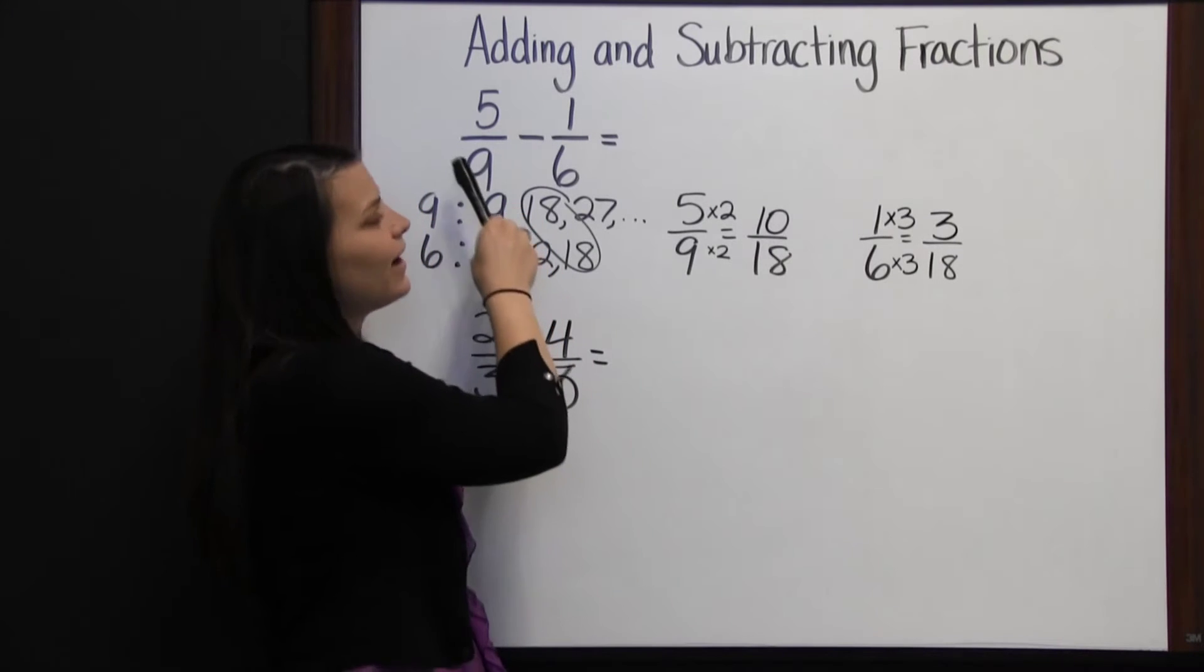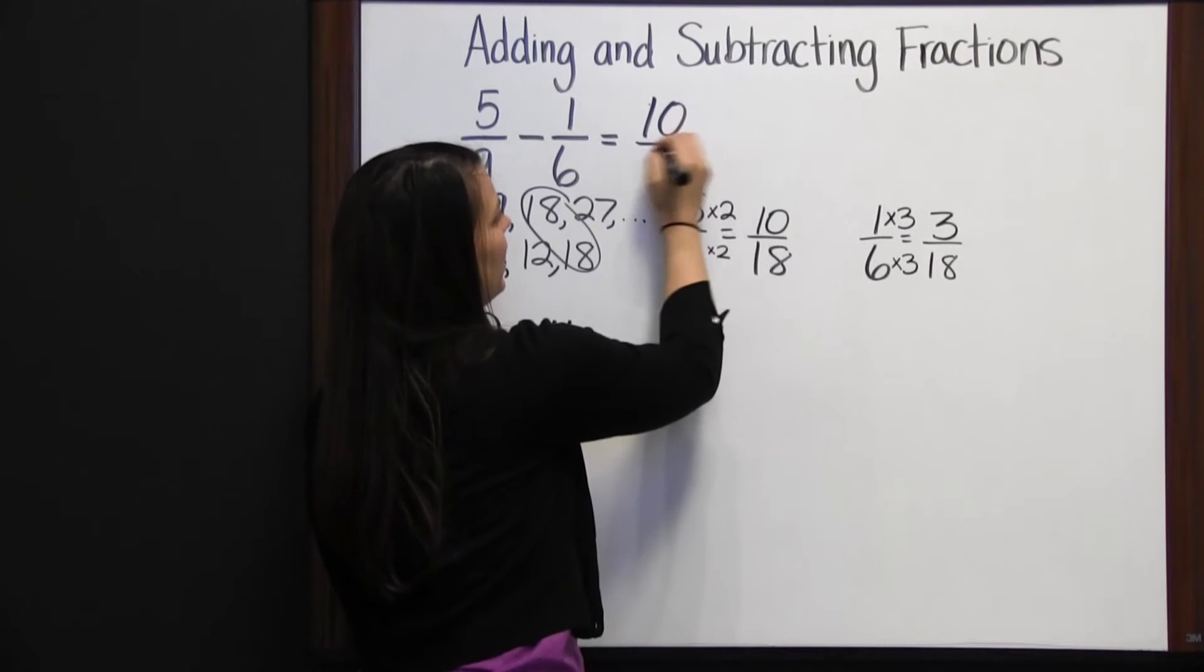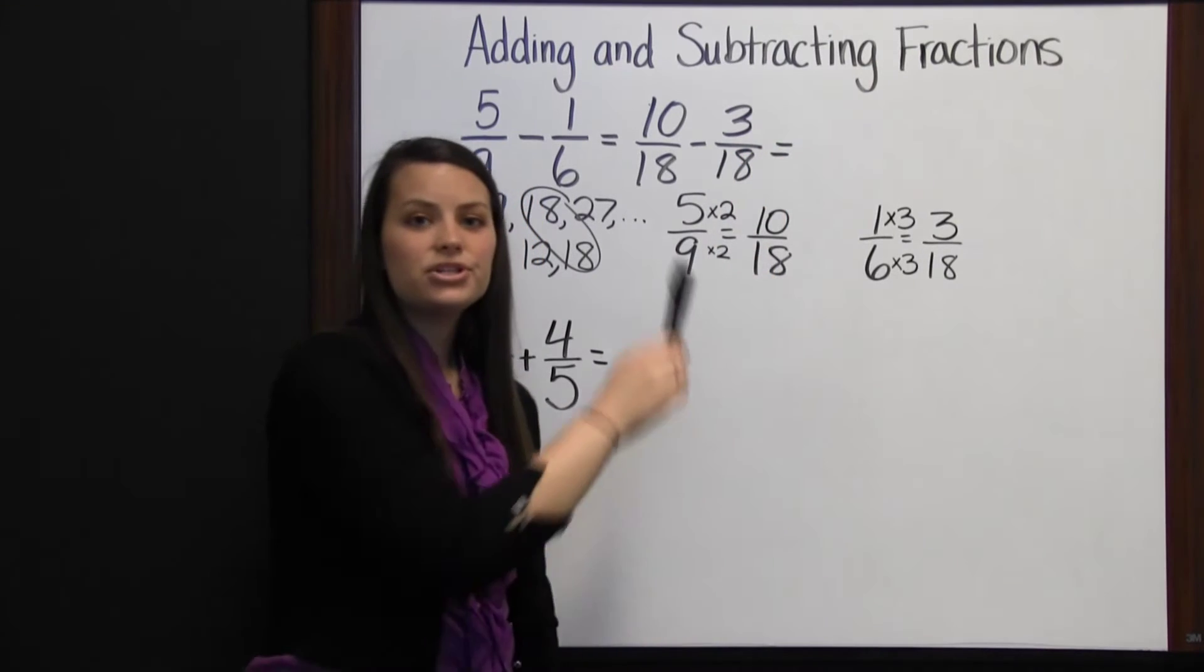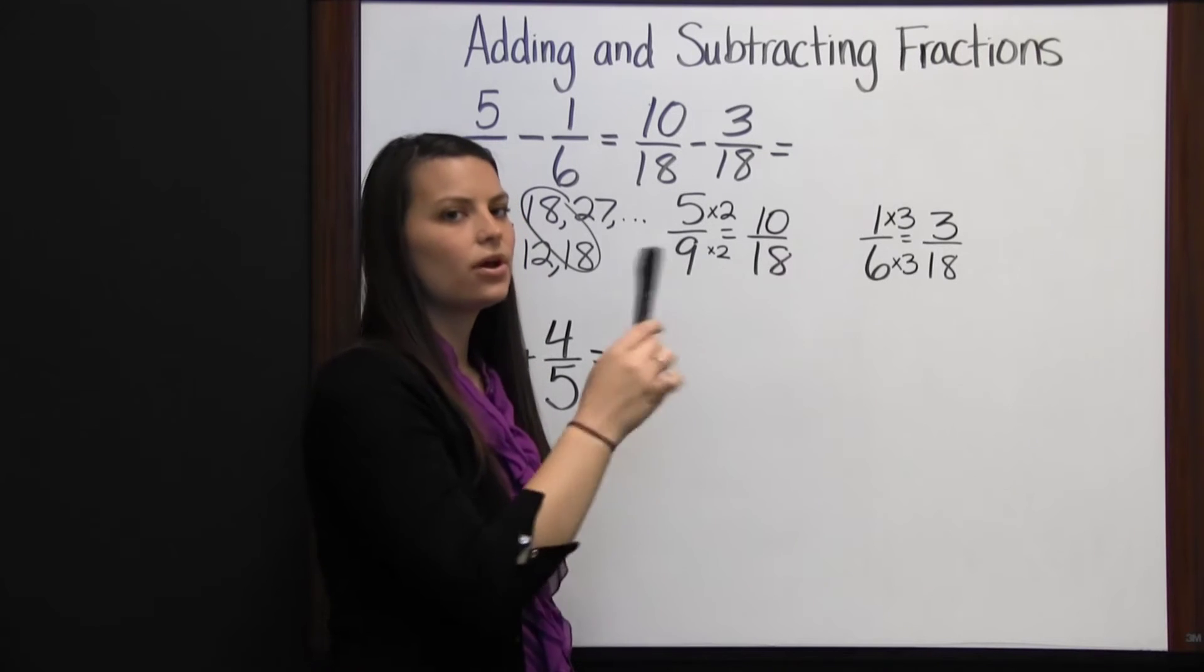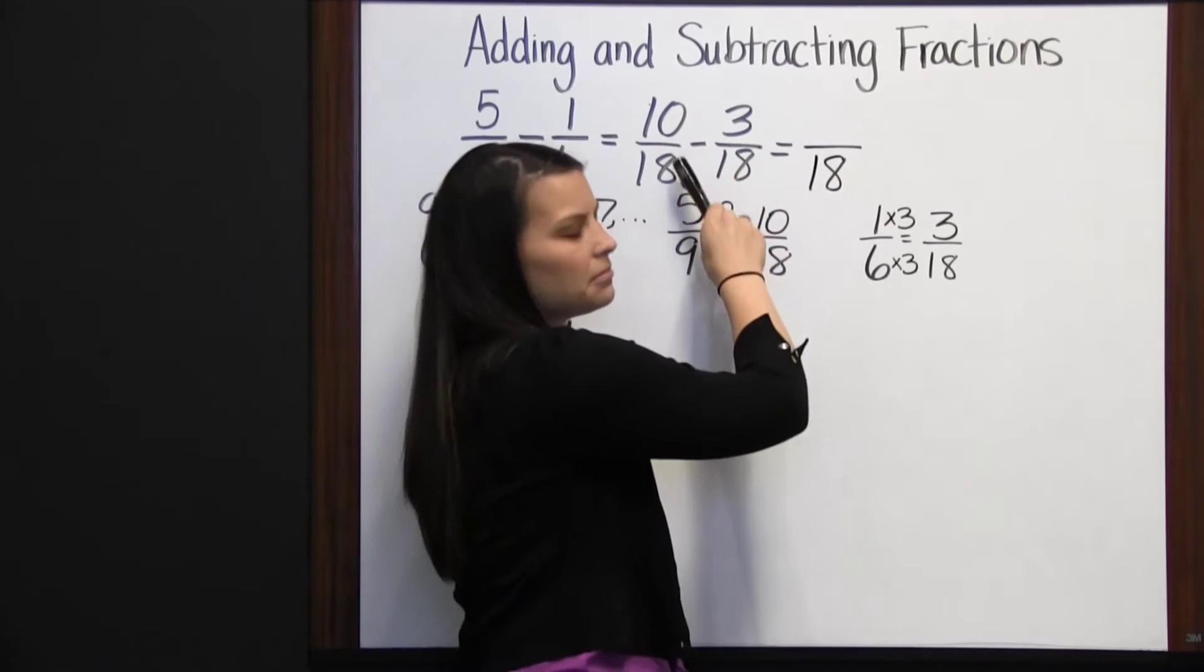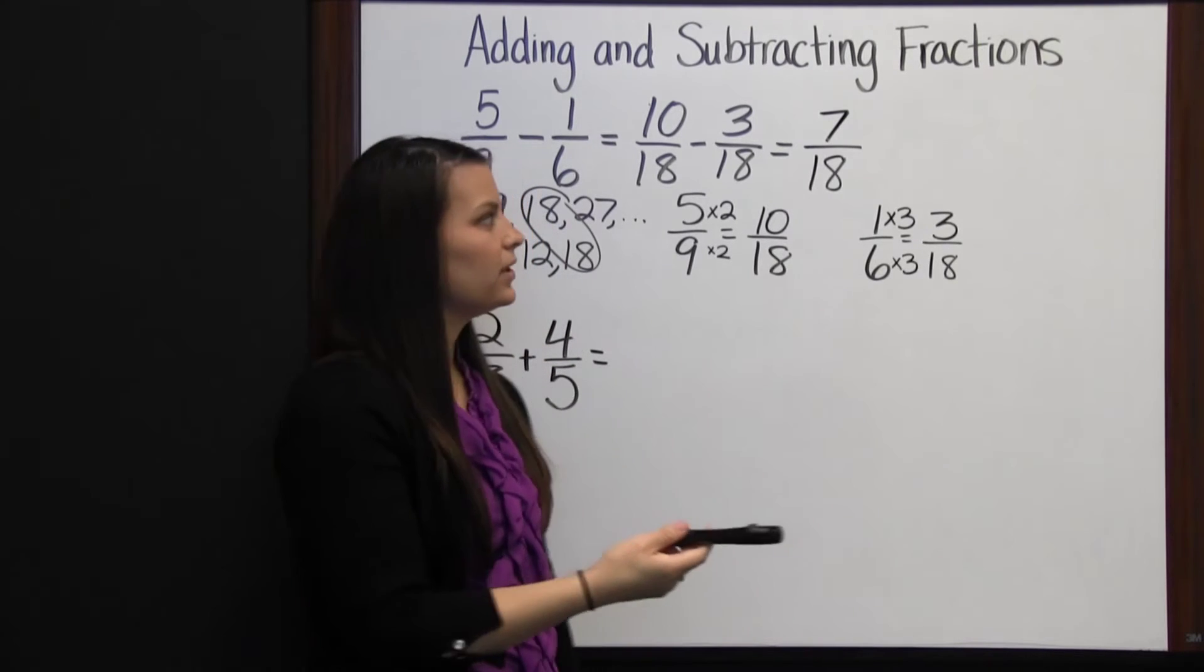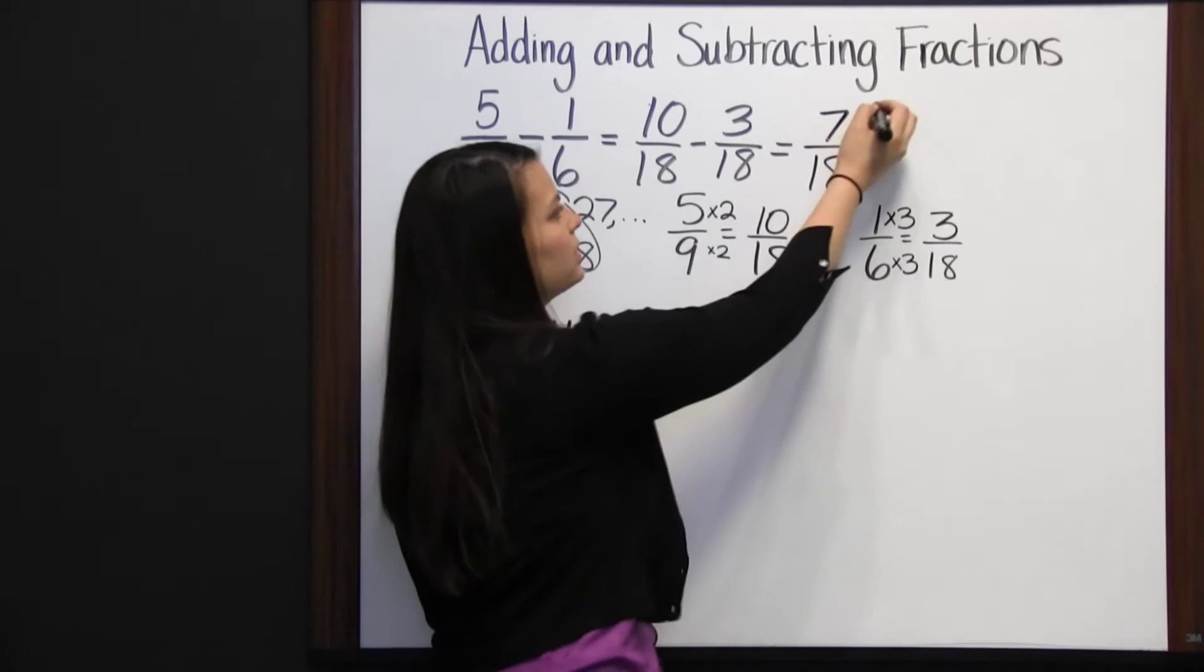So that means that five-ninths minus one-sixth is equal to ten-eighteenths minus three-eighteenths. Now we just subtract our numerators and put that difference over our denominator of eighteen. Ten minus three is seven. Then, if you can simplify the result, you should. But in this case, seven-eighteenths cannot be simplified, so that's our answer.